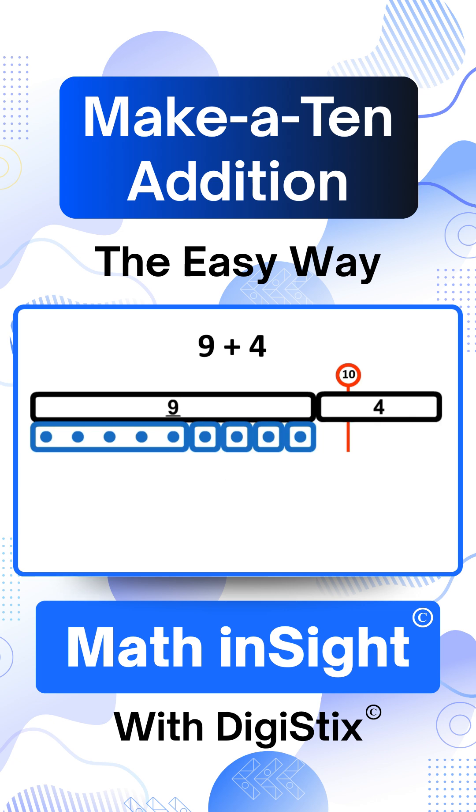There's an easy way to remember this method for addition. We decompose 4 into 1, the 10-pal for 9, and 3. We make a 10 by adding 9 and its 10-pal, which is 1.